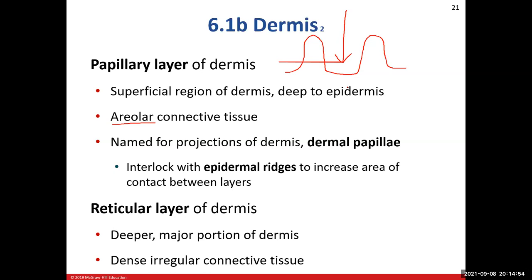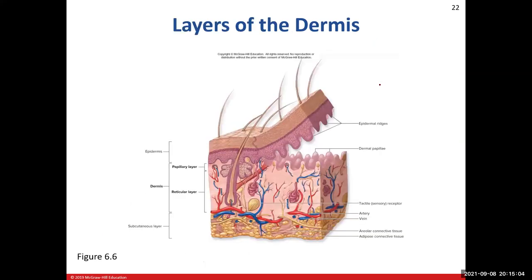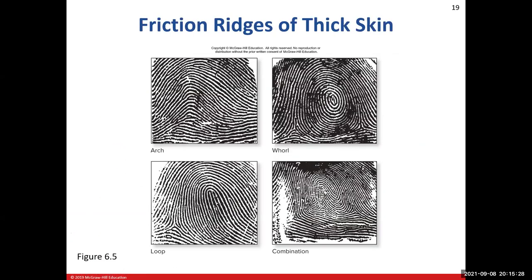Between the dermal papillae you have the epidermis projecting downward — we call those the epidermal ridges. They create a locking mechanism between the epidermis and the dermis. The interaction between the epidermal ridges and the dermal papillae is what creates our fingerprints.